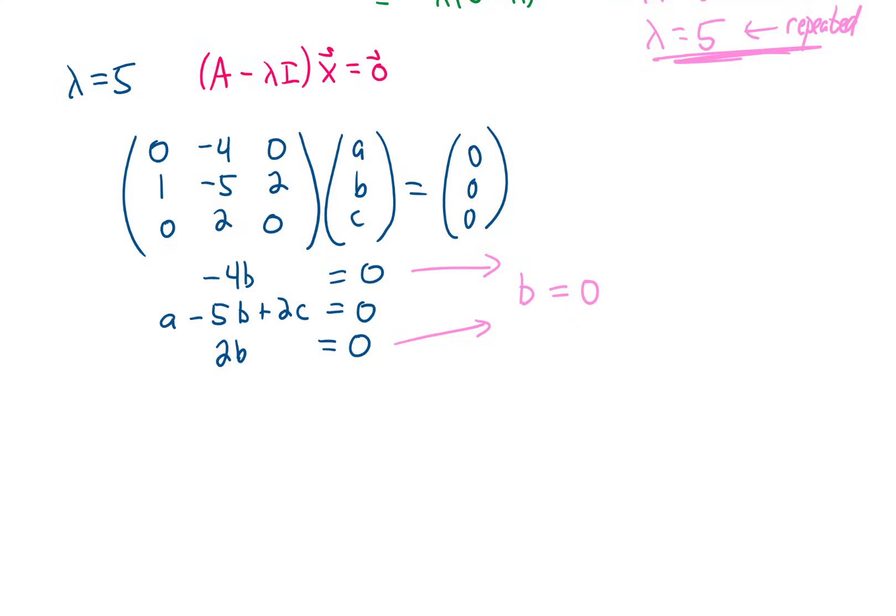That is not a free variable. b must be zero. Plugging b=0 into this middle equation gives us a+2c=0. You'll notice right off the bat that this gives us one free variable. We can choose either a or c to be our free variable. I'll choose c=1 as our free variable, and that is going to give us a=-2.